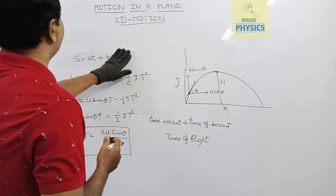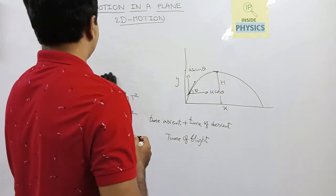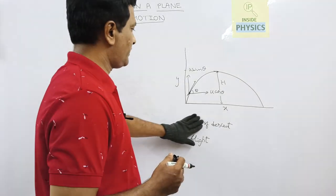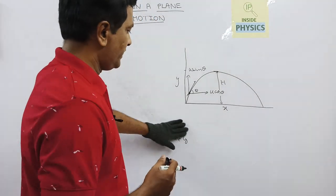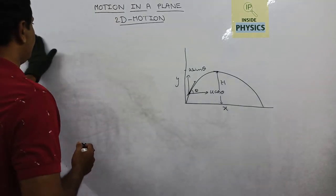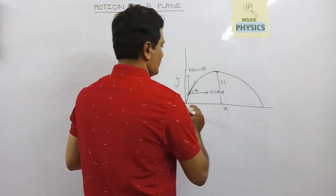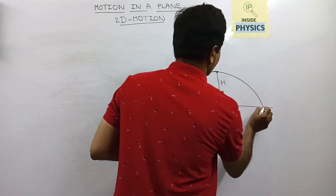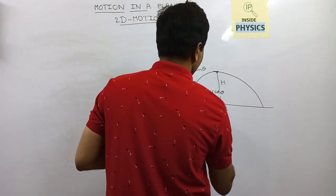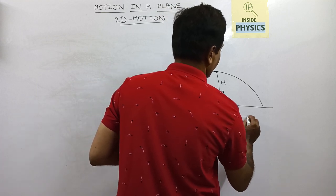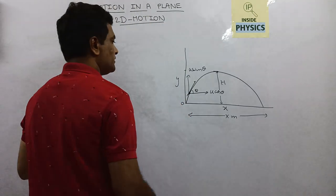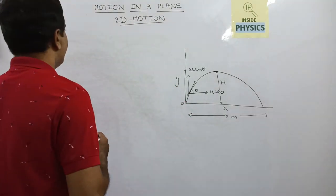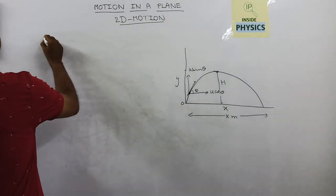Now we will see what is the horizontal range. The definition of range of a projectile: when a projectile is thrown at an oblique angle following a trajectory in projectile motion, the horizontal distance covered by the projectile is called the range. If this distance is x meters, the range of this projectile is x meters. The horizontal distance is calculated as velocity into time.